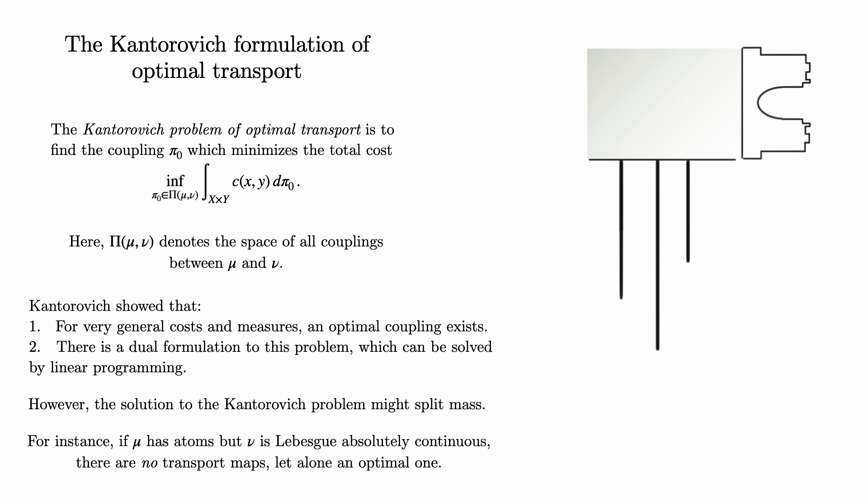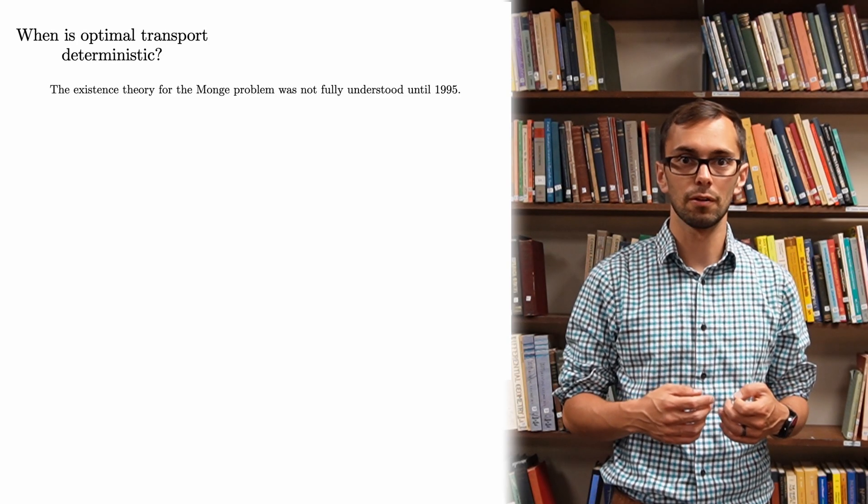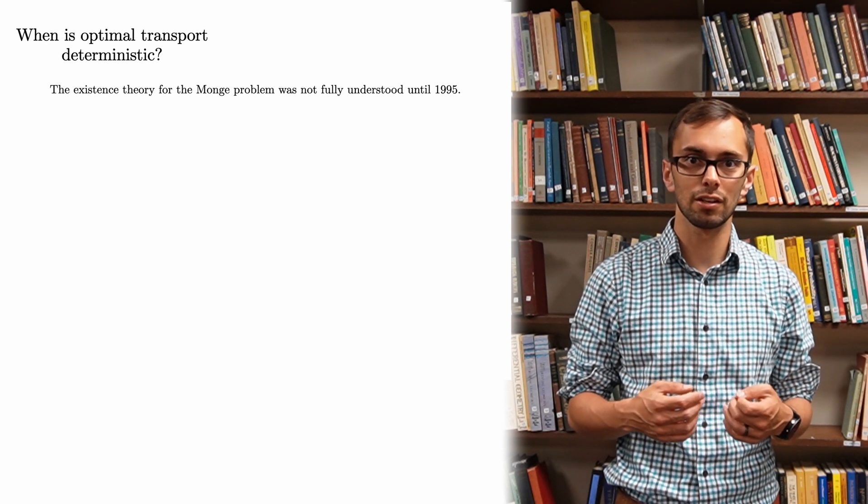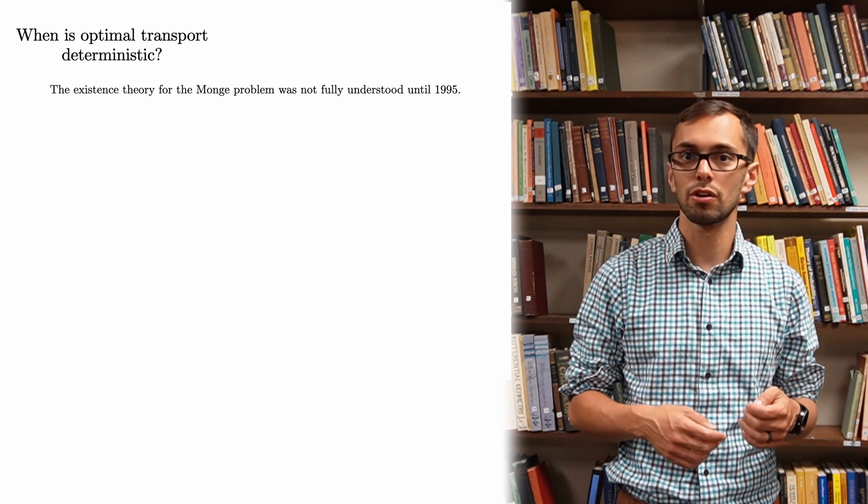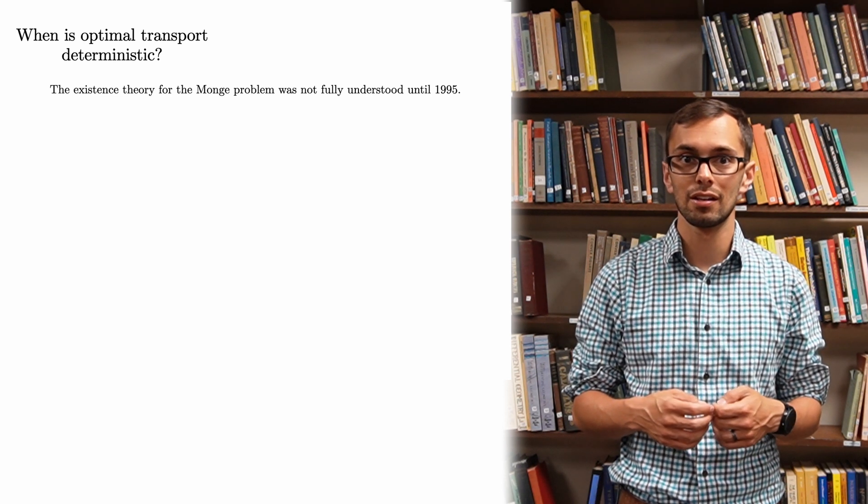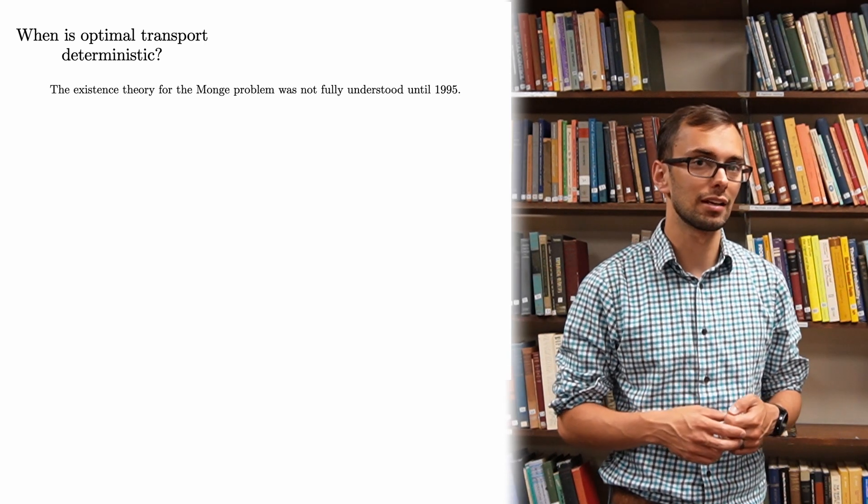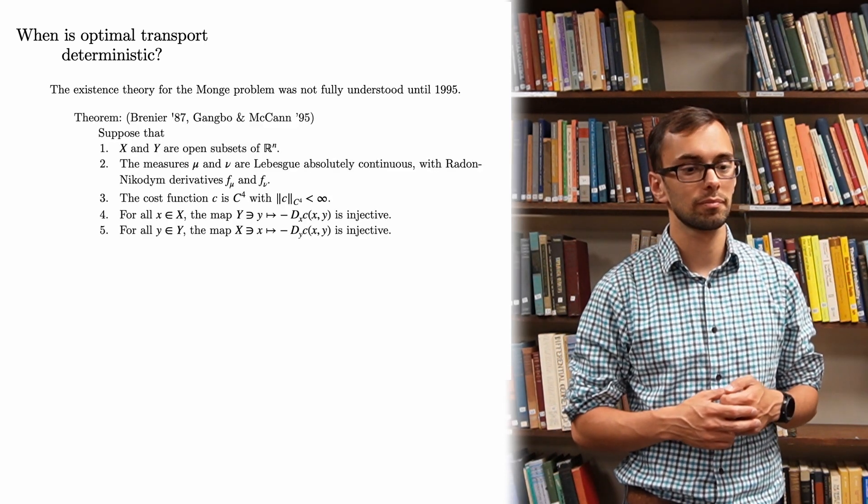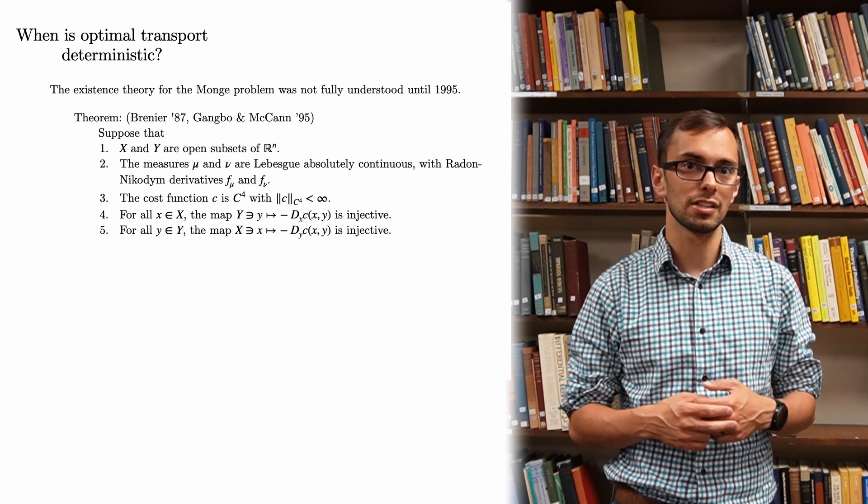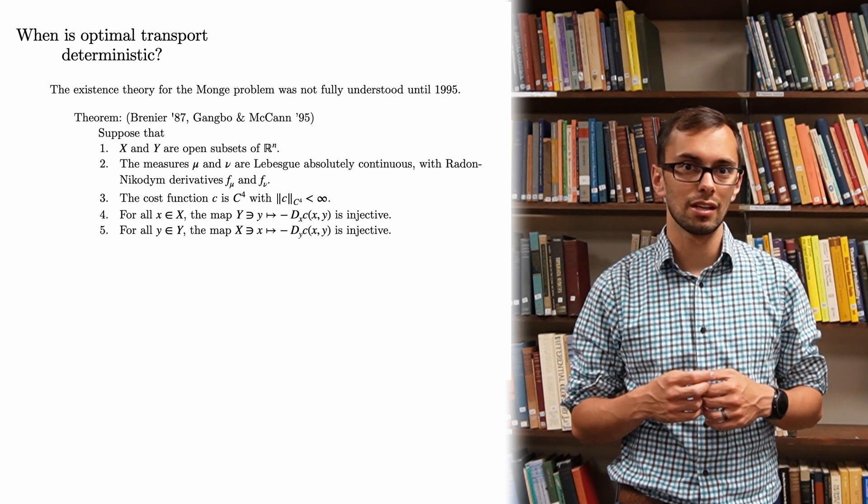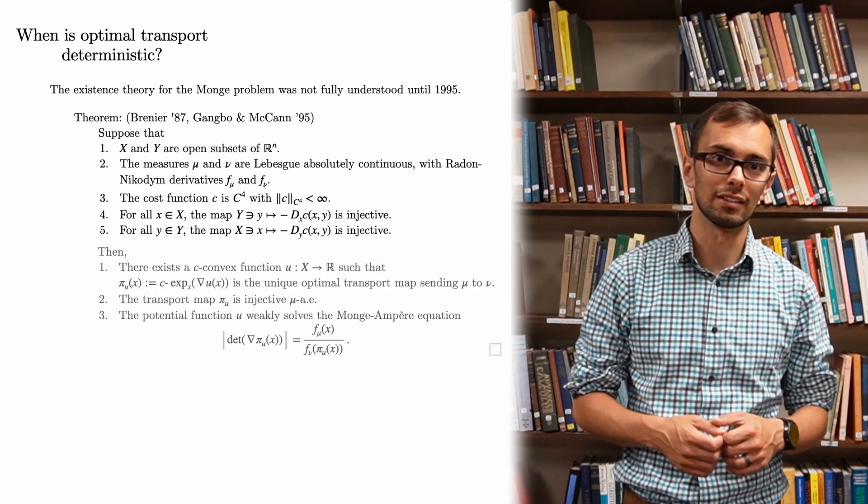As such, the existence question for the Monge problem remained open for some time, and was fully solved less than 30 years ago. In particular, for the square distance cost, Yann Brenier found sufficient conditions in order to solve the Monge problem in 1987, and its results were generalized by Wilfrid Gangbo and Robert McCann in 1995. Although this is a fundamental result in optimal transport, it's a bit more involved than the others I've mentioned, and the full statement is fairly lengthy, as you can see.